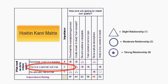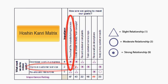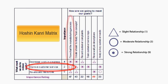The next what is improving customer service. It has been decided that the importance of this what is a 2. The strength of the relationship between improving customer service and flow charting the manufacturing process has a moderate relationship, so 2 times 3 is 6. That cell now has the numeric value of 6.